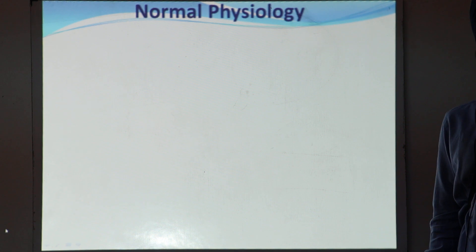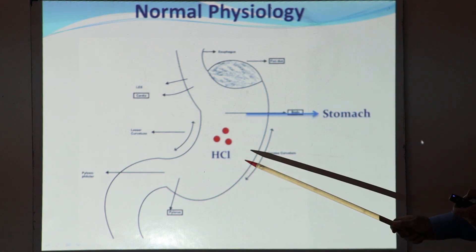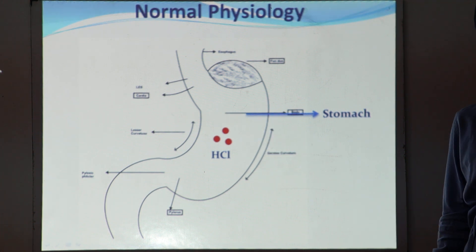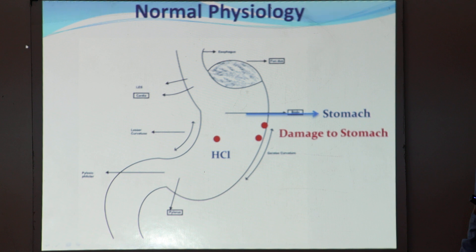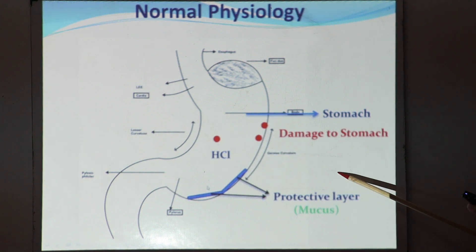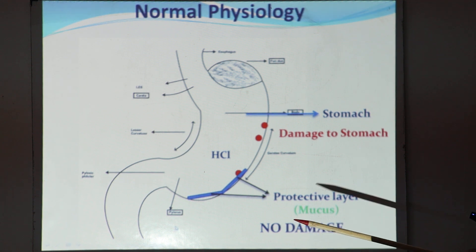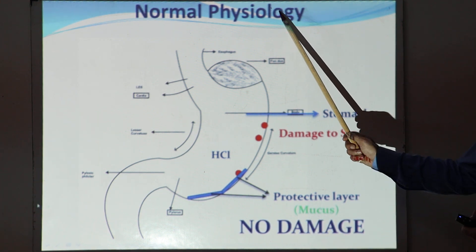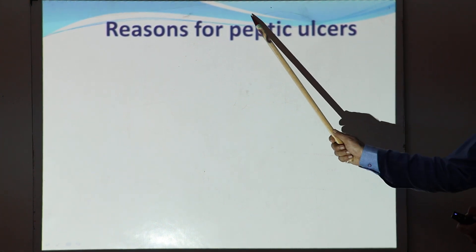First I want to discuss normal physiology. HCl plays an important role in digestion of proteins, and we have an acidic pH in the stomach. This acid can damage the stomach, but in normal conditions it doesn't happen because the whole stomach is covered with a protective layer — basically a mucus layer. So when the acid acts on the mucosa, there is no damage because of this mucus protection.